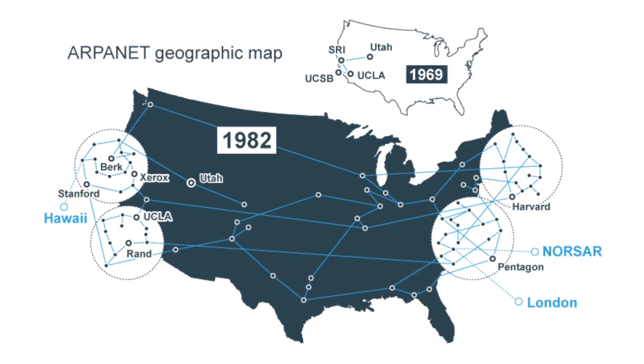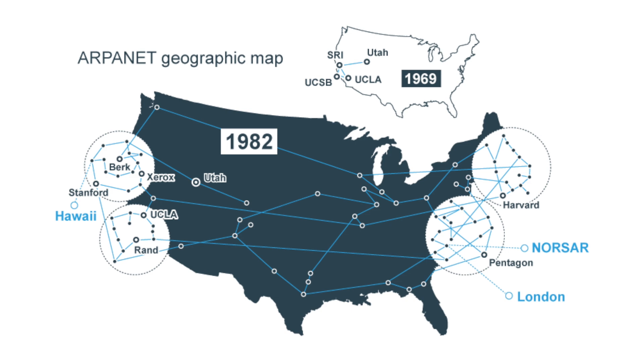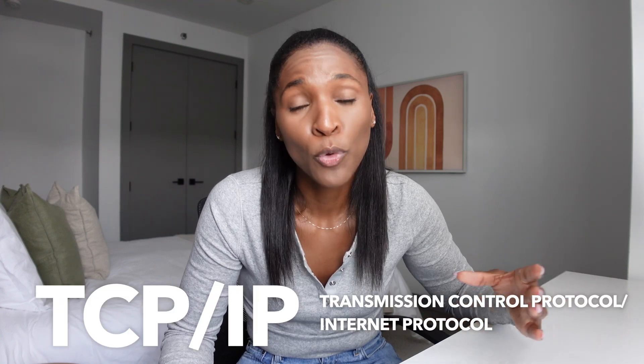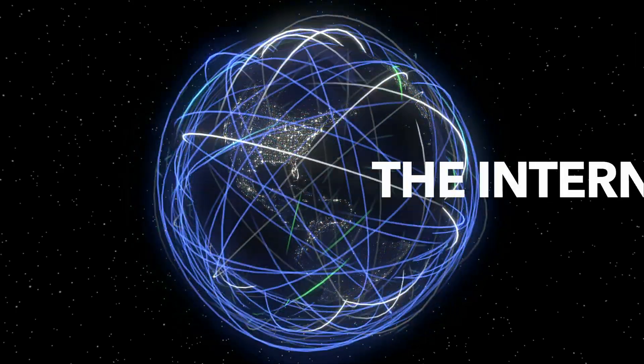So over the next two decades, ARPA continued to grow while other wide-area networks started to spread across the U.S. But it wasn't until 1983 where a standard communication protocol known as TCP/IP was created and allowed all these different networks to work together. And when they finally did, it became known as the internet.